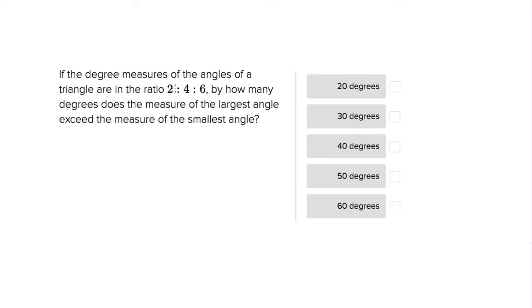It's telling us we have a ratio of 2 to 4 to 6 for our three angles in the triangle, and then it's telling us that they want how much greater the largest angle is than the smallest angle.